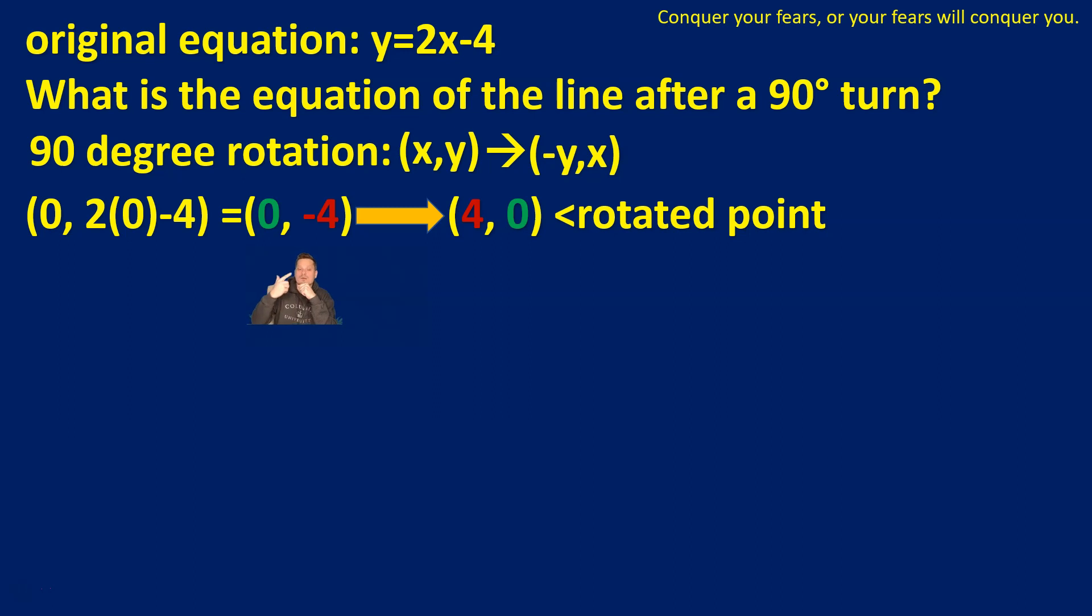Let's do this one more time for one other point. Now you should know that there's nothing special about using the point (0, -4). I can compute any point on the original line and rotate it 90 degrees. Let's do this one more time. I'm going to have the following now: (1, 2 times 1 minus 4). So again, I'm just generating another point on the original line.